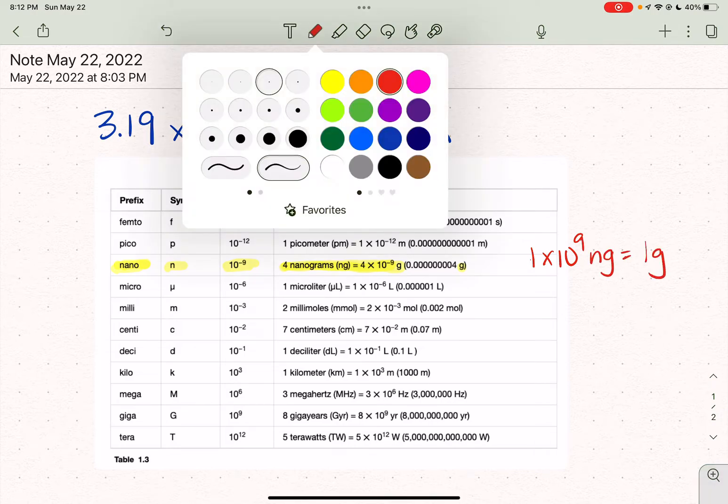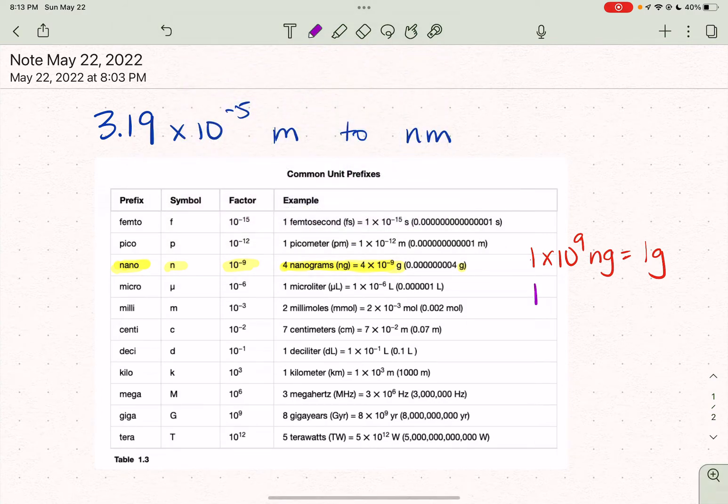And then I'm going to use purple to write 1 times 10 to the negative 9 grams equals 1 nanogram. You can do that either way.